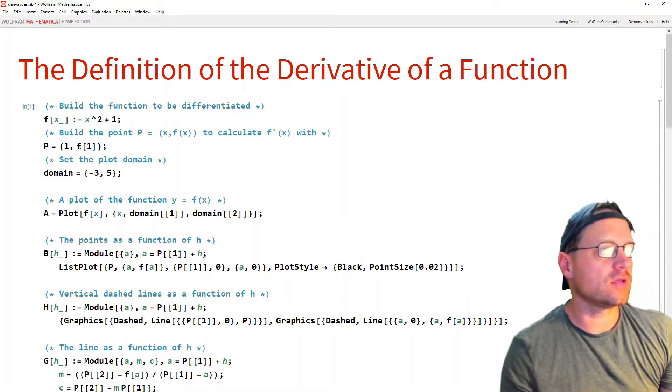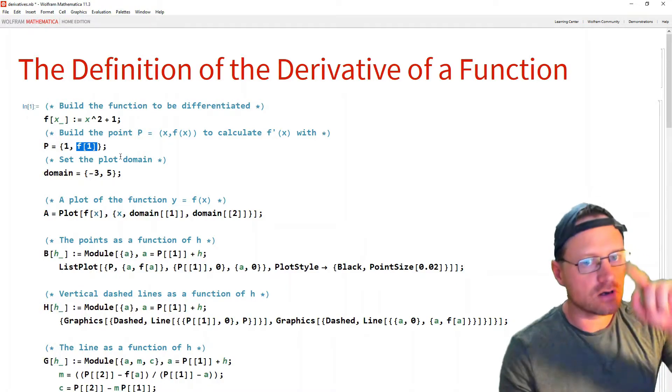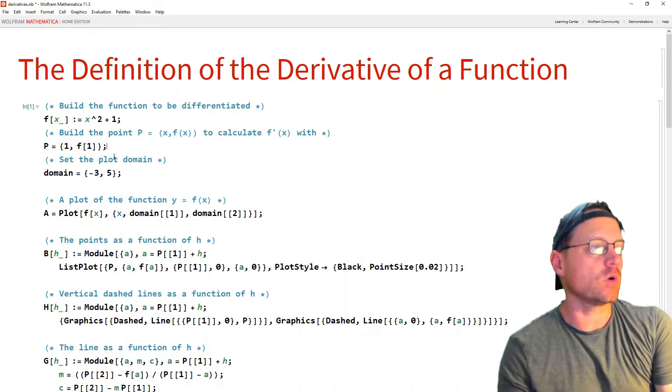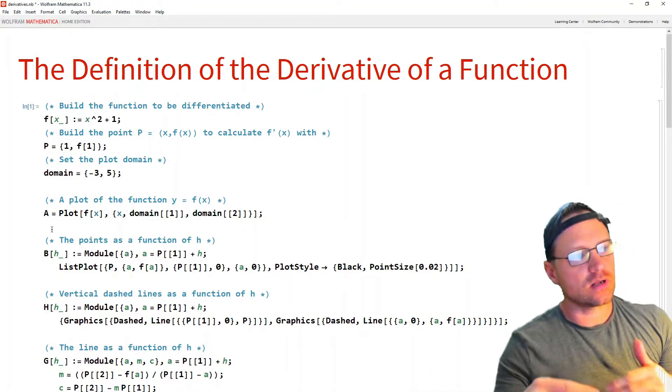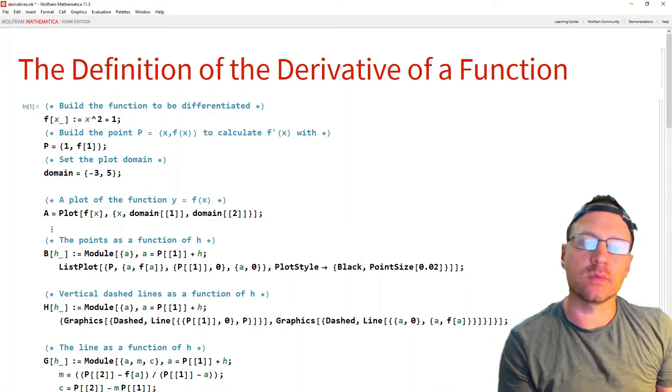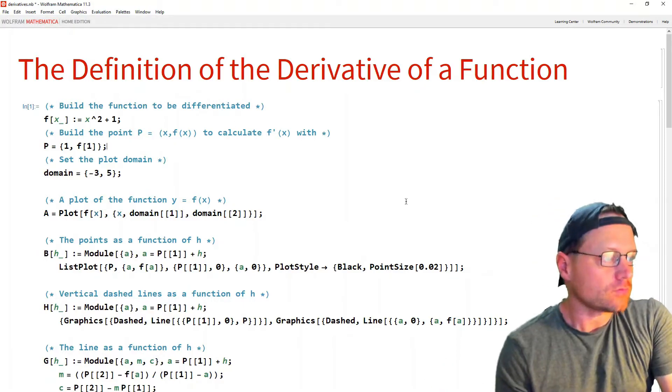So here I use the function that I've built above and describe the point with the curly brackets as 1 comma f of 1. Next I need a region to plot this in. And notice that I'm building it in such a way that I can automate this entire process and just change the function from the beginning and do this for a different function.